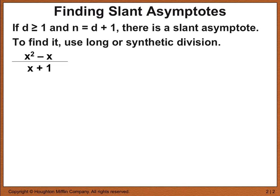Let's look at this sample rational function. Our big N of x is x squared minus x — that's the numerator. Our big D of x is x plus 1 — that's the denominator. Our little n, the degree of the numerator, is 2. Our little d, the degree of the denominator, is 1. Since 1 is greater than or equal to 1, it passes the first condition, and since 2 is 1 more than 1, it passes the second condition. Therefore, there must be a slant asymptote for this rational function.